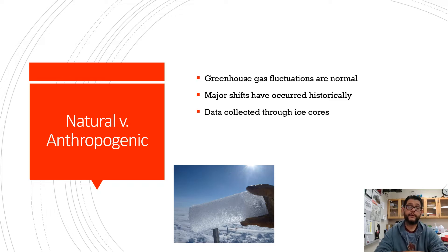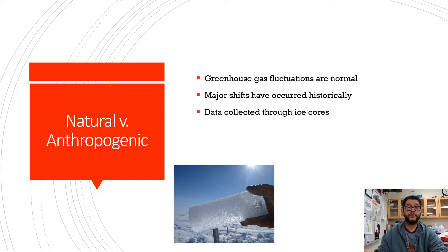In this one, some of the things we want to point out is that there is a natural greenhouse effect — greenhouse gas fluctuations are normal. There have been major shifts historically, but we've been able to look at ice cores to compare previous CO2 levels to current CO2 levels. Here's what some of that looks like.